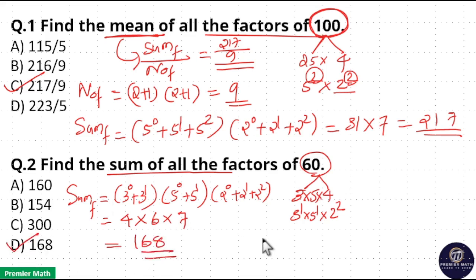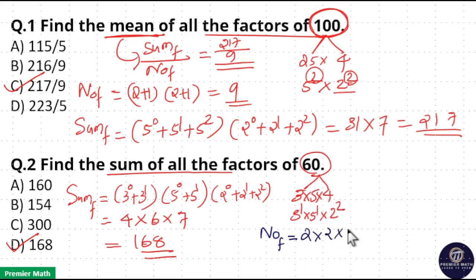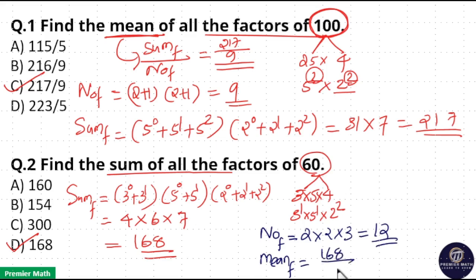Sum of factors of 60 is 168, so option D is your answer. Number of factors of 60 is equal to 2 into 2 into 3, equal to 12. Then mean of factors is equal to 168 divided by 12, equal to 14.